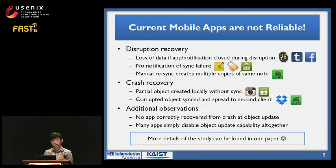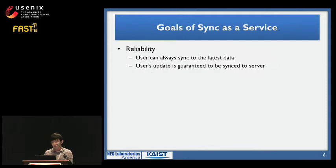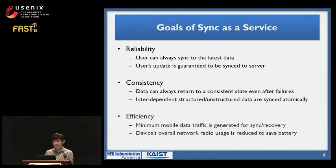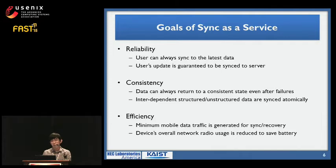We see so many problems in current apps, whether they implement their own data management or use existing sync services. Let me list the requirements that a sync-as-a-service should have. First, it should guarantee reliability — the user can always sync to the latest data in the cloud. Second, it should guarantee consistency — users always see data at a consistent state even after failures, with atomic synchronizations of interdependent tabular and object data. Third, it needs to guarantee efficiency — minimal data traffic and reduced radio usage to save battery.